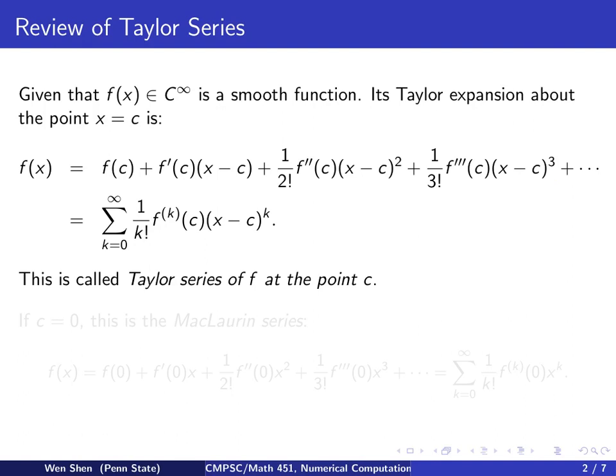We could use this compact summation notation: summing from k=0 to infinity, (1/k!)f^(k)(c)(x-c)^k. These are polynomials in x, and this is a power series. The neat thing is that if you know the information of the function at point c—the function itself, its derivative, second derivative, third derivative, and kth derivative at point c—